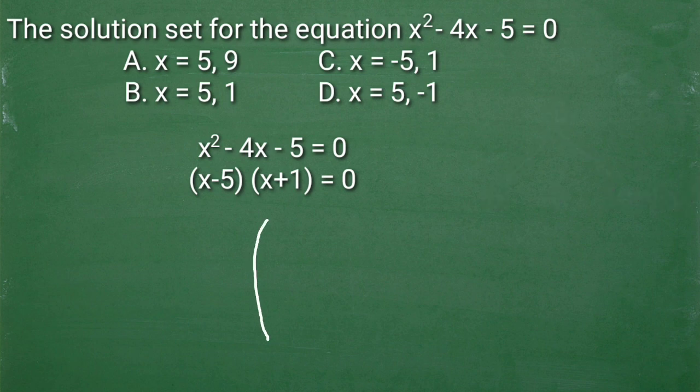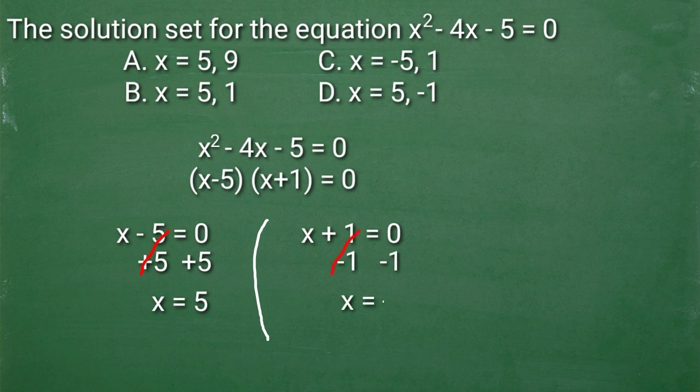Equate lang ulit natin sa 0 ang X minus 5 at X plus 1 to get the values of X. X minus 5 is equal to 0. And then add tayo to gabi lang side ng 5. And X is equal to positive 5. Then, X plus 1 is equal to 0. Subtract tayo both sides by 1. So we will get the value of X equals to negative 1. So ang solution set natin ay positive 5 and negative 1. And that would be letter D.